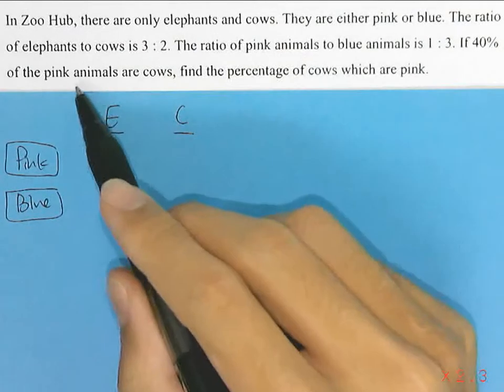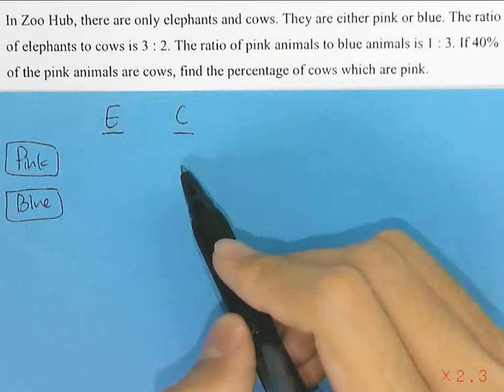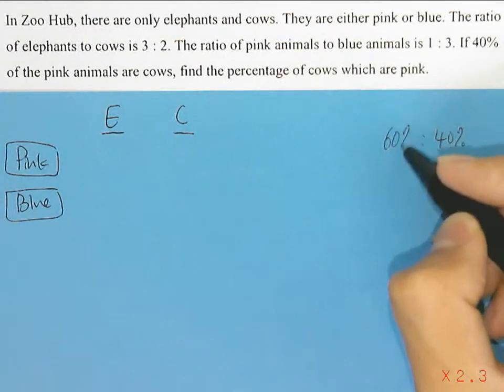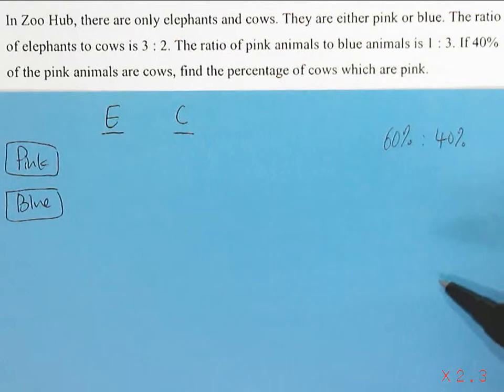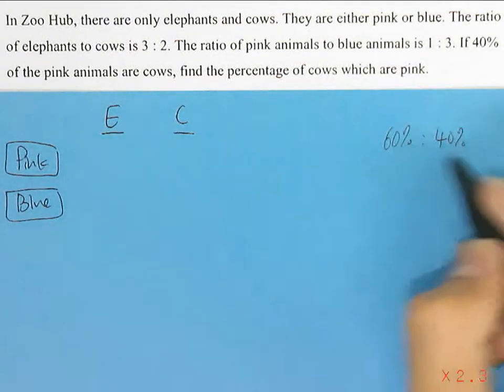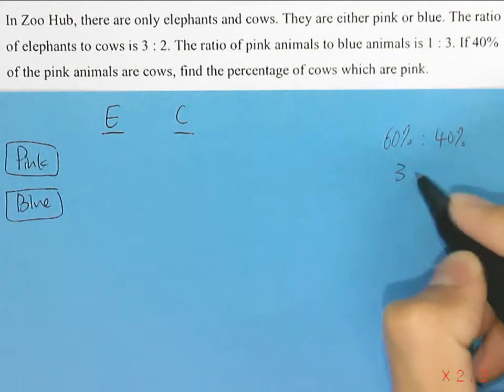If 40% of the pink animals are cows, then we are left with 60% of pink animals to be elephants. So this ratio 60% to 40% can be simplified into 3 to 2.